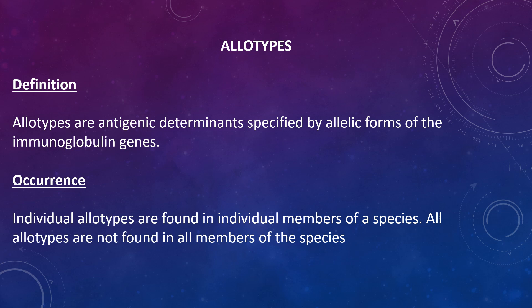Moving on to allotypes: allotypes are antigenic determinants specified by the allelic forms of the immunoglobulin genes. They represent slight differences in amino acid sequences of heavy or light chains among different individuals. Even a single amino acid difference can give rise to an allotypic determinant, although in many cases there are several amino acid substitutions. Allotypic differences are detected using antibodies directed against allotypic determinants, which can be prepared by injecting immunoglobulin from one person into another. In practice, anti-allotype antisera are obtained from women who have had multiple pregnancies, from people who have received blood transfusions, or from some patients with rheumatoid arthritis.